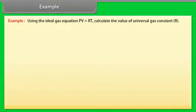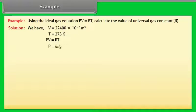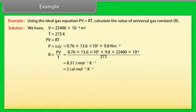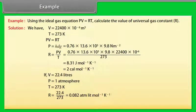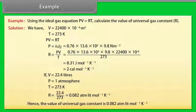Let's take an example of kinetic theory of an ideal gas. Using the ideal gas equation PV is equal to RT, calculate the value of universal gas constant. Let's see the solution. We have V is equal to 22400 into 10 to the power minus 6 meter cube, T is equal to 273 Kelvin, PV is equal to RT, P is equal to HDG. Now we calculate value of R by putting the values. R is equal to PV by T is equal to 2 calorie per mole per Kelvin. If V is equal to 22.4 liters, P is equal to 1 atmosphere, T is equal to 273 Kelvin, R is equal to 0.082 atmosphere liter per mole per Kelvin. Hence the value of universal gas constant is 0.082 atmosphere liter per mole per Kelvin.